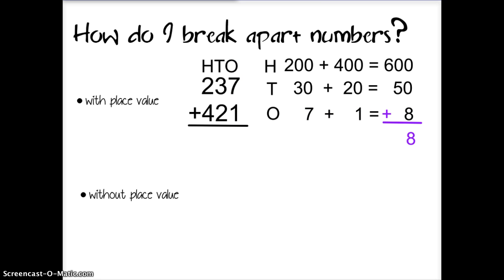Finally I have seven ones plus one one equals eight ones. When I add them together my ones place zero plus zero plus eight is a sum of eight. My tens digits zero and five add up to five. I only have one hundredth digit six. So my sum is 658.